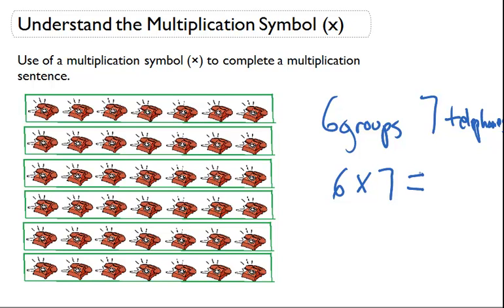So let's just count it up and see if we're right. 1, 2, 3, 4, 5, 6, 7, 8, 9, 10, 11, 12, 13, 14, 15, 16, 17, 18, 19, 20, 21, 22, 23, 24, 25, 26, 27, 28, 29, 30, 31, 32, 33, 34, 35, 36, 37, 38, 39, 40, 41, 42.